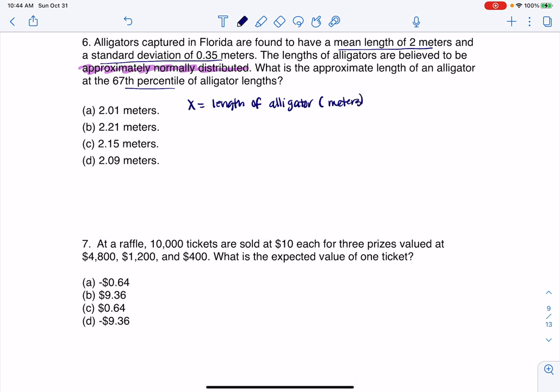So that would be a continuous numerical variable, and I'd have to figure out was it uniform or normal, but it just straight says normal. So I'm going to write that I have a normal distribution here, and my variable is normally distributed. It's centered at 2, and it's got a standard deviation of 0.35.